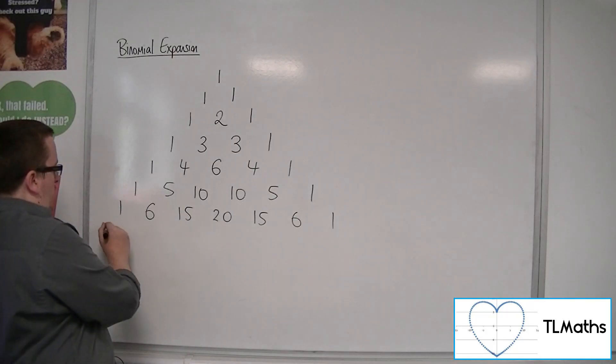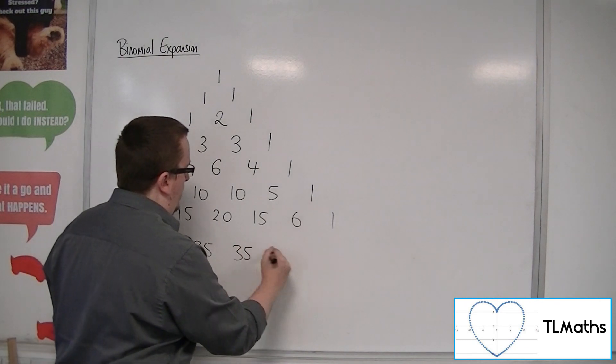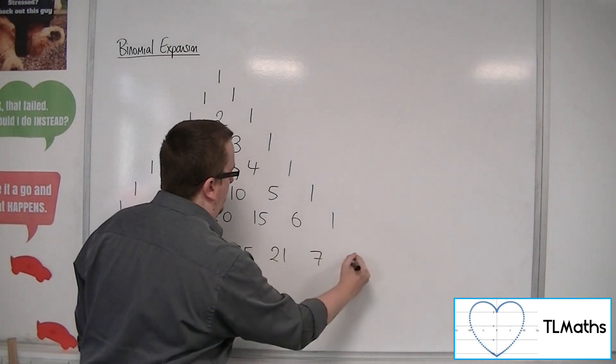The next row would be 1, 7, 21, 35, 35, 21, 7, 1.